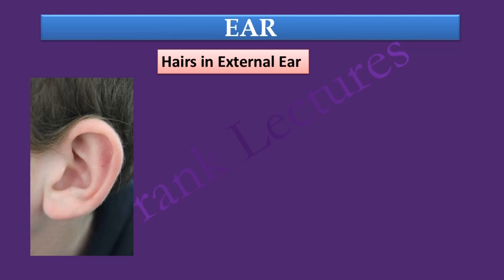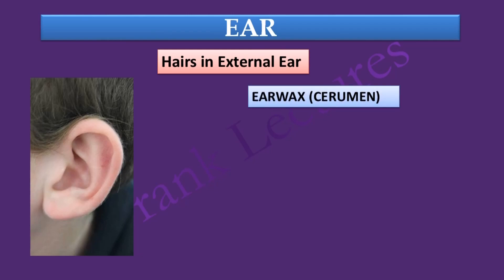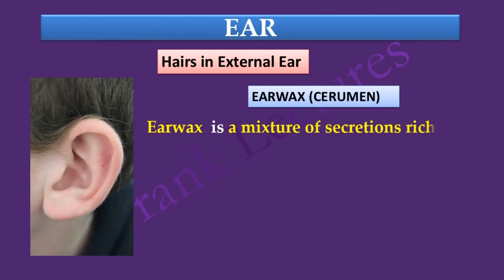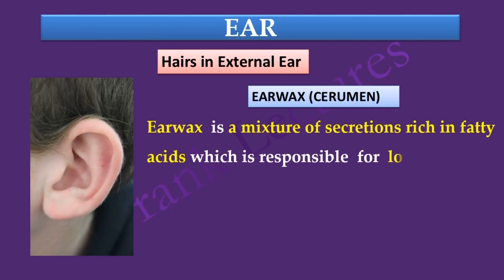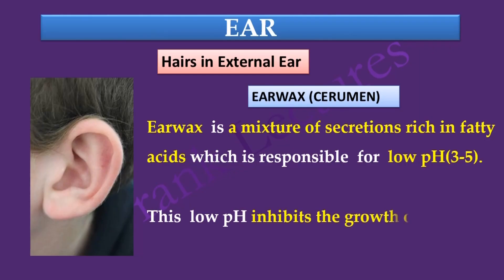In the ear, there are two features which act as a defense barrier to pathogens: hairs in the external ear and earwax, also known as cerumen. Both features prevent the entry of microbes inside the ear. Earwax is a mixture of secretions rich in fatty acids, which are responsible for the low pH of the ear. This low pH inhibits the growth of many pathogenic microbes.